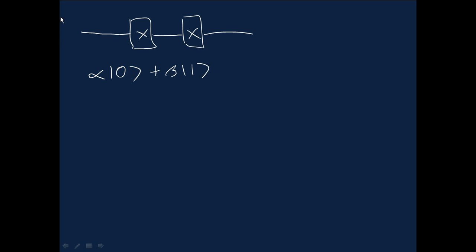So if the input state here at the left is alpha 0 plus beta 1, it gets changed by the first NOT gate to alpha 1 plus beta 0.